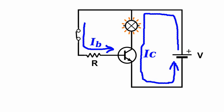The base current IB is controlled by the base resistor R. We will now learn how to calculate R so that the transistor enters saturation.